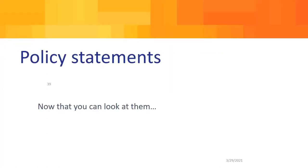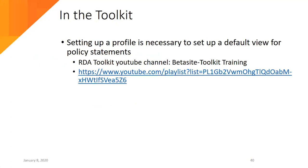Now that we have policy statements in the Toolkit — and you'll be able to see pretty much all of them next month — I wanted to go over some of the editorial decisions we've made and some helpful things to know. If you want to set up a profile so that you automatically have the policy statements displaying in the right way, you need to set up a profile and then set up a default view. The RDA Toolkit YouTube channel has some training related to this, and I would strongly urge you to go check it out.